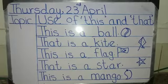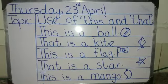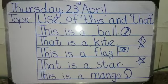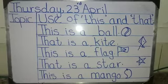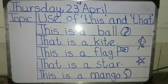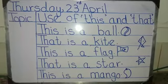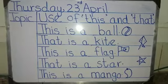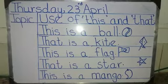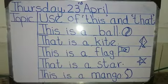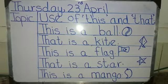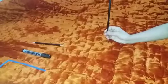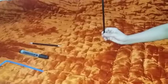'This' is used for one object, place, person, animal, etc. that is near to us. 'That' is used for one object, animal, place, person, etc. that is far from us.